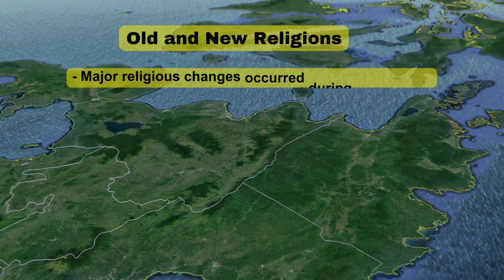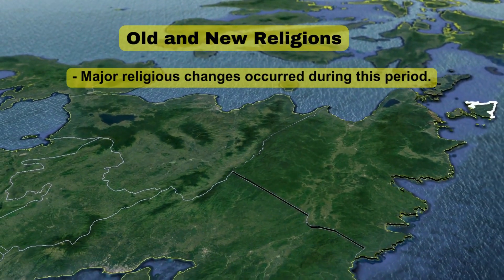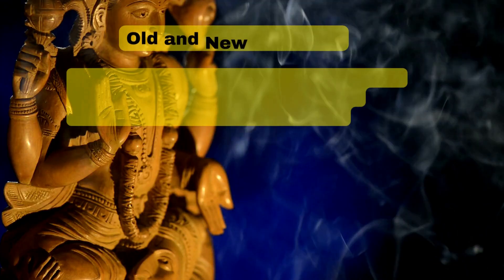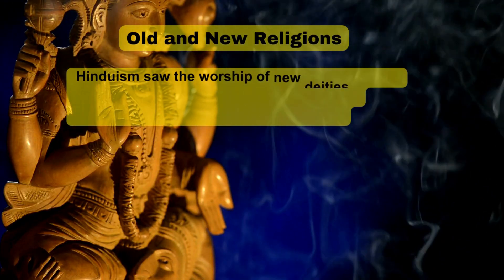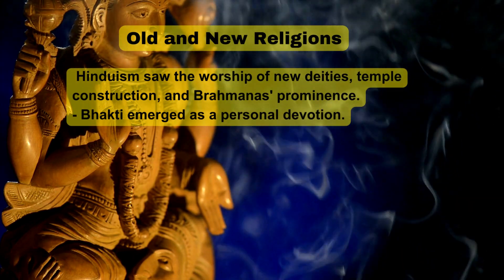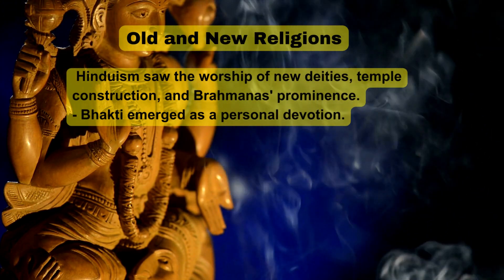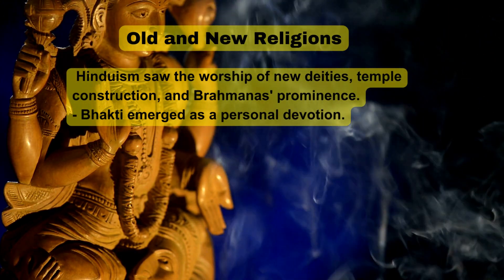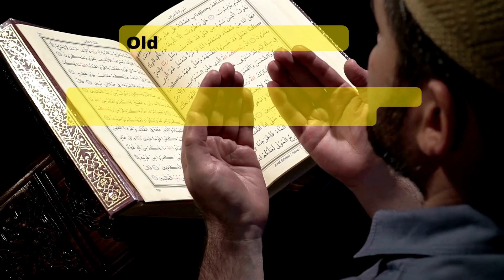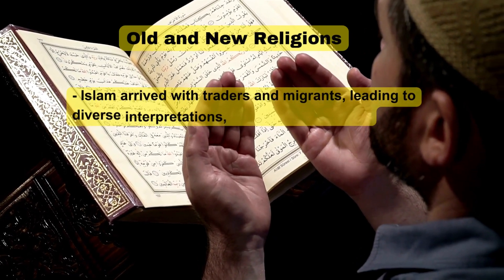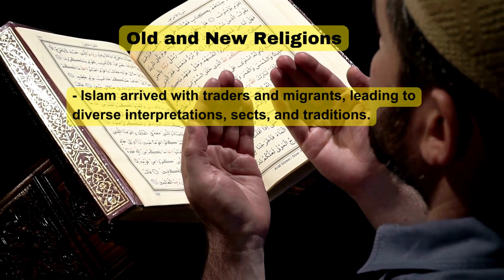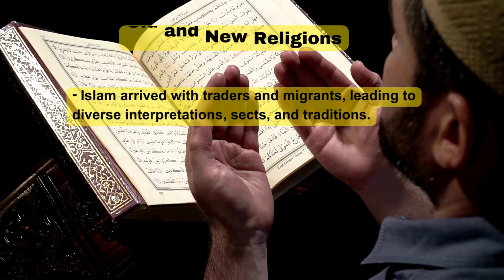Old and new religions: Major religious changes occurred during this period. Hinduism saw the worship of new deities, temple construction, and Brahmanas' prominence. Bhakti emerged as a form of personal devotion. Islam arrived with traders and migrants, leading to diverse interpretations, sects, and traditions.